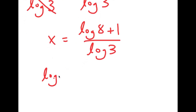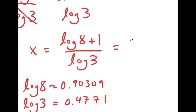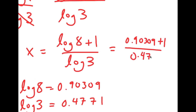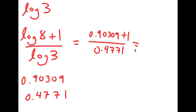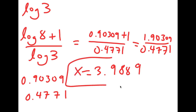Now, log 8 is equal to 0.90309, and log 3 is equal to 0.4771. So this is going to equal 0.90309 plus 1 over 0.4771, which is equal to 1.90309 over 0.4771. And 1.90309 over 0.4771 is equal to 3.9889. So x is equal to 3.9889.